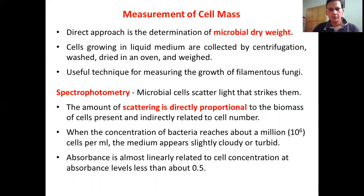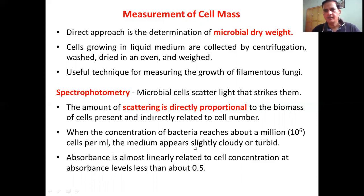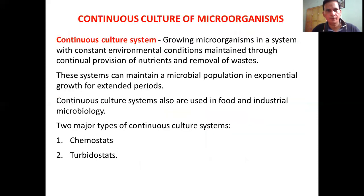Another technique is spectrophotometry. When microbes are in culture and light strikes them, they scatter the light. The amount of scattering is directly proportional to the biomass of cells present, and indirectly related to cell number. If the bacterial concentration reaches around 10⁶ cells per ml, the medium appears slightly cloudy or turbid. By measuring absorbance, we can differentiate initial from final growth. The absorbance must be less than 0.5 to maintain linearity; above 0.5, linearity is lost.